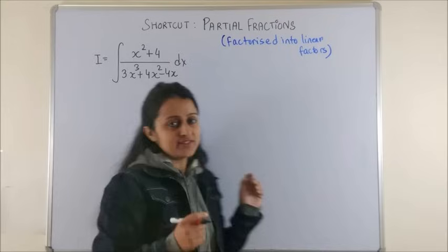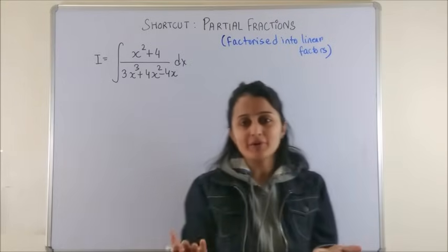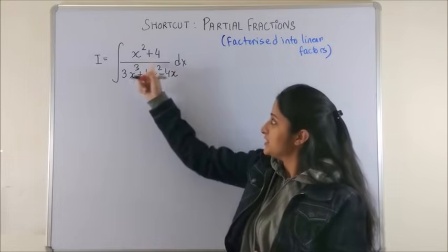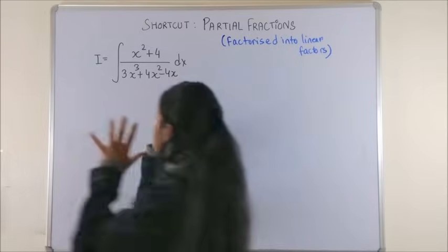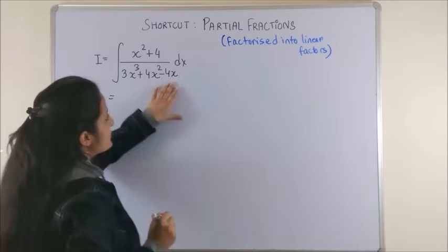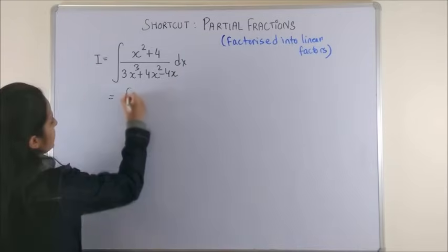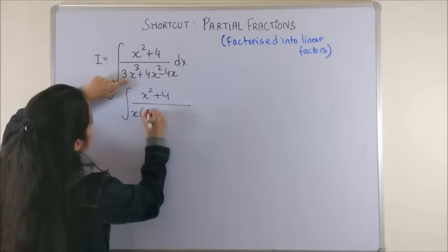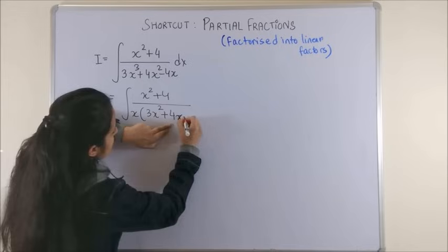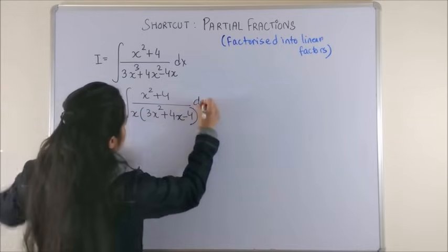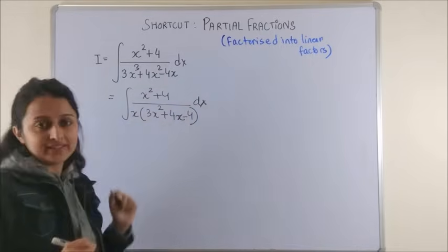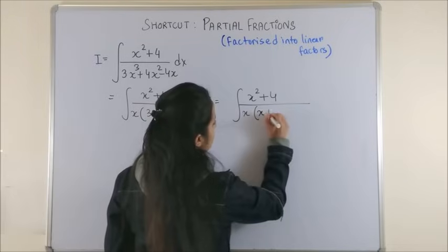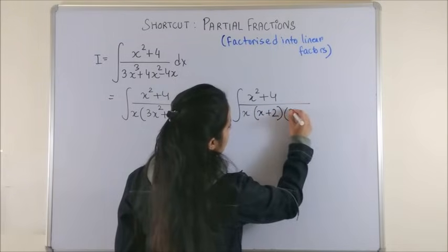Now have a look at this one. Of course, it has to be a proper rational function, so here the degree is two and here the degree is three. Now, having done that, let's try to see if we can factorize our denominator. So first we can take x common, so we will be left with three x squared plus four x minus four. Now let's factorize this further. If you work on the factors, they would turn out to be x plus two and three x minus two.